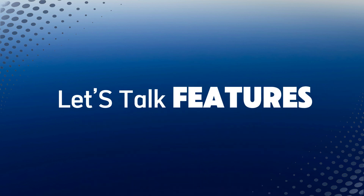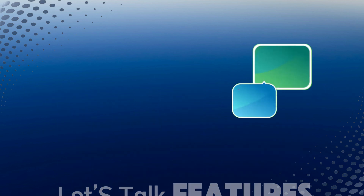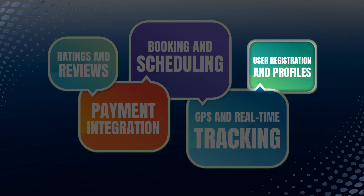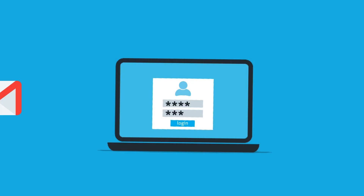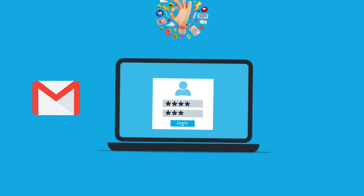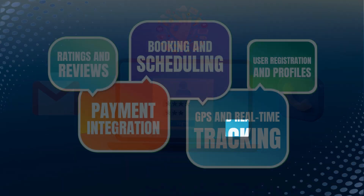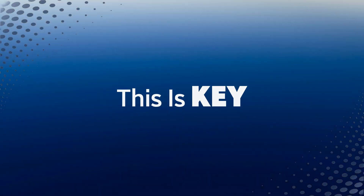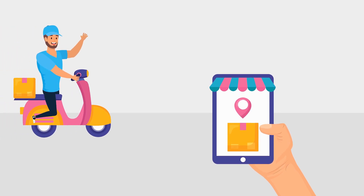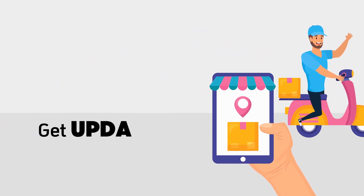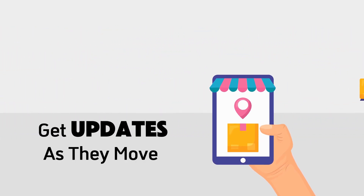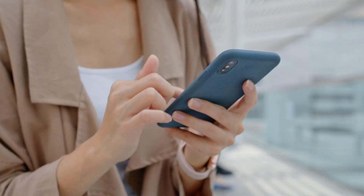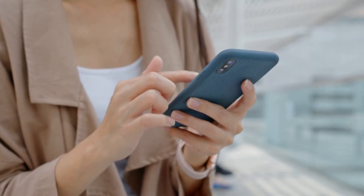First up, let's talk features. Every transportation app has a few essentials. You'll need user registration and profiles — a simple sign-up with email, social media, or phone number. GPS and real-time tracking is key. Users need to see their location, where their driver or vehicle is, and get updates as they move. Booking and scheduling: let users book rides on the spot or schedule them for later. It's all about convenience.